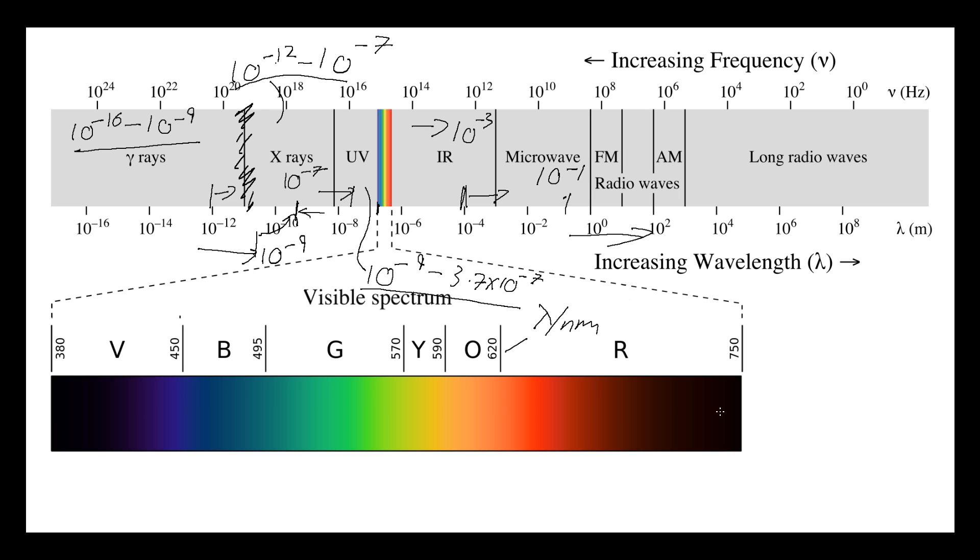Then we travel through the visible spectrum into infrared, which takes us up to about 10 to the minus 3.